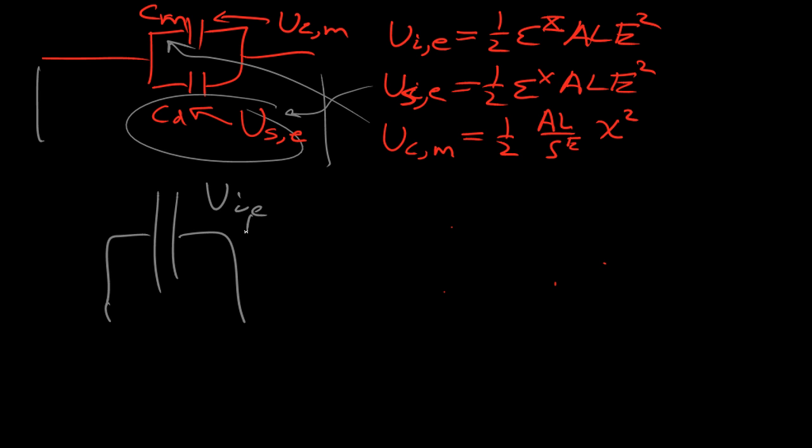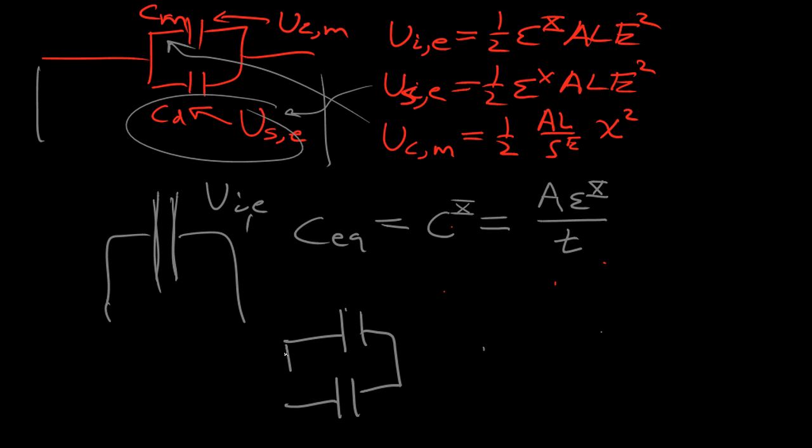So now we want to relate these energies together. What are these capacitances? The equivalent capacitance is equal to C under constant stress, which is basically A epsilon under constant stress over the thickness. This is the capacitance. The easy one would be the bottom one. So CD is equal to A epsilon X over T.